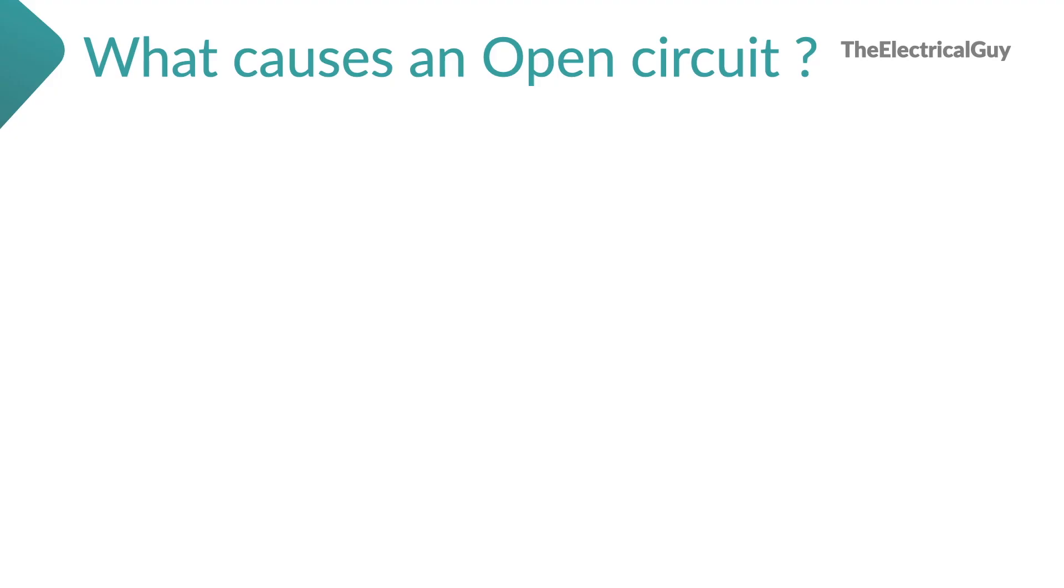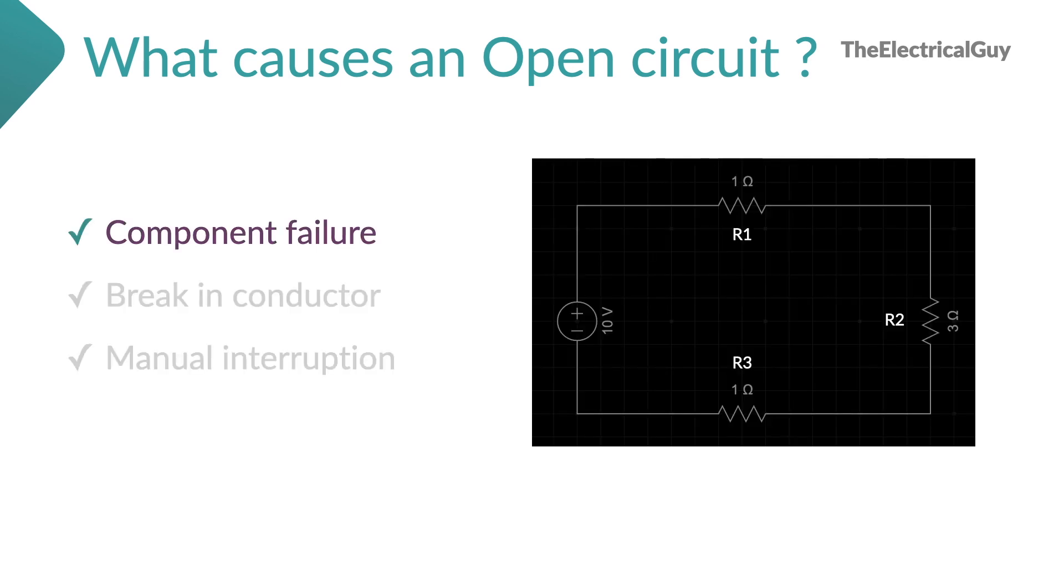Now open circuit can happen because of multiple reasons which includes component failure, brake in conductor and manual interruption. Component failure means any of the component in the circuit becomes faulty or gets damaged.